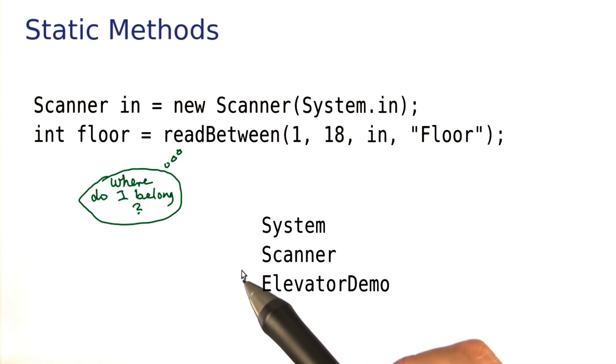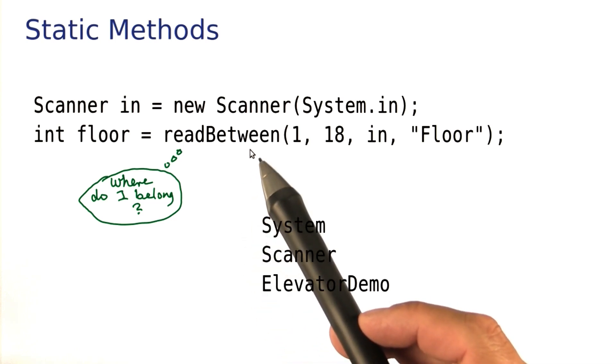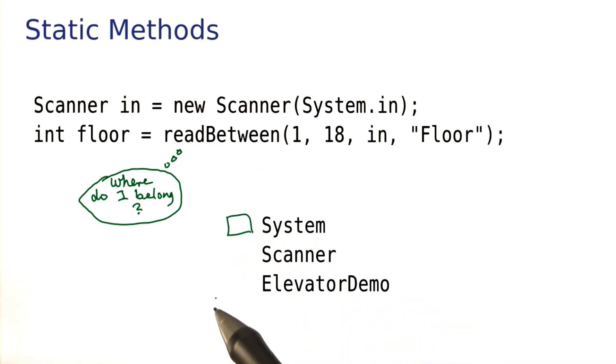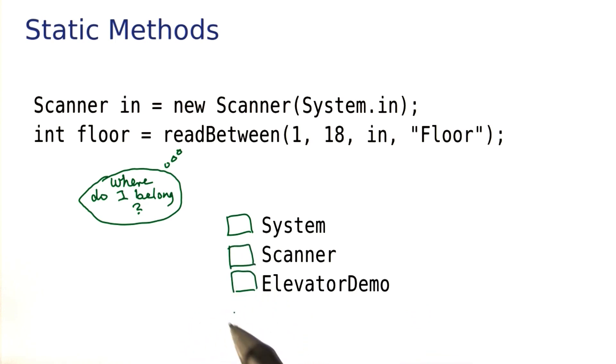Well, in which class do you think the read between method should be put? The system class? The scanner class? The elevator demo? Or maybe somewhere else? Just think about it, and give me your best guess.